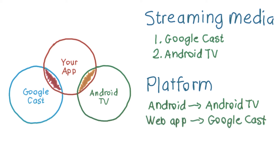If you've got a web app, it can most easily be extended to the living room by using the Google Cast platform. The Chrome API takes care of rendering the app and then streaming that content to the Cast device. If you've already got an iOS app, it can also easily be extended to the living room by using the Google Cast SDK for iOS.